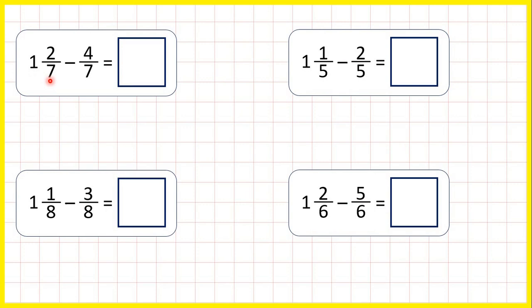We have one and two-sevenths minus four-sevenths, but we have a problem here because the fraction we're subtracting is larger than the fraction in our mixed number.